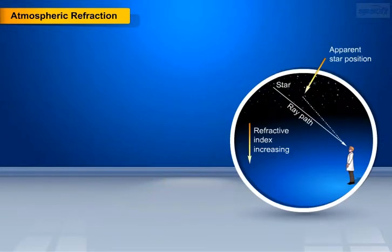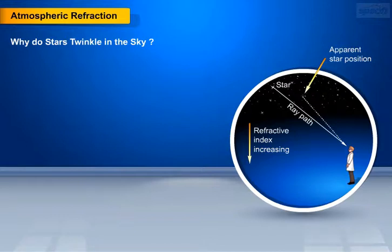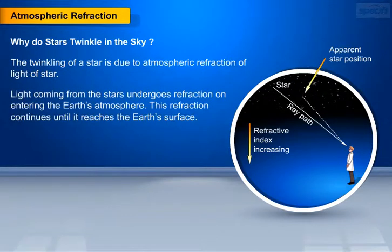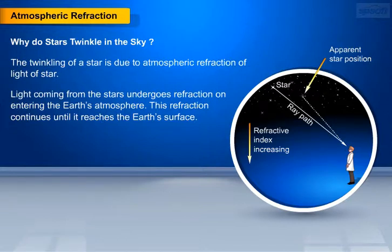Now let's study why stars twinkle in the sky. The twinkling of a star is due to atmospheric refraction of light from the star. Light coming from the stars undergoes refraction on entering the earth's atmosphere. This refraction continues until it reaches the earth's surface.